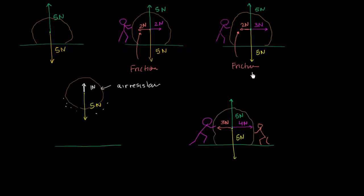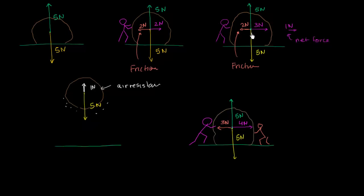In the third scenario, the normal force is still balancing the force of gravity in the vertical direction. But in the horizontal direction, this guy is pushing harder with 3 Newtons while the force of friction is only 2 Newtons to the left. So you do have a net force to the right — 3 Newtons minus 2 Newtons — a net force of 1 Newton to the right. This is a scenario where you have unbalanced forces.